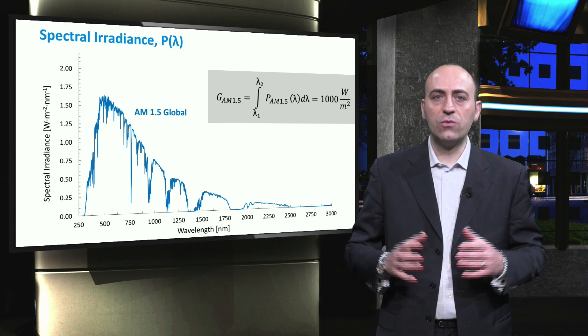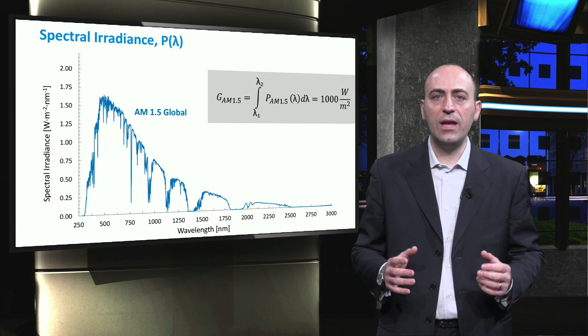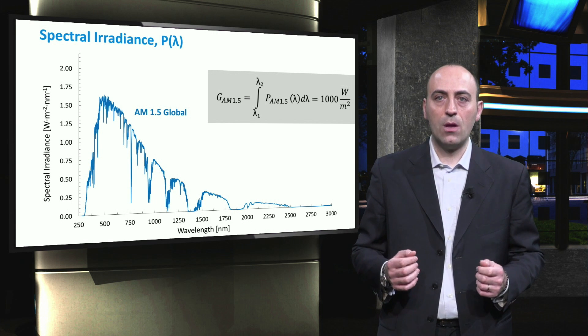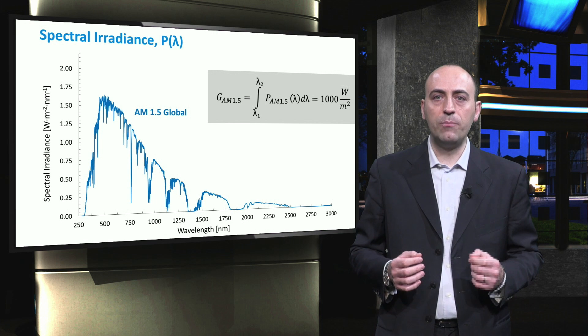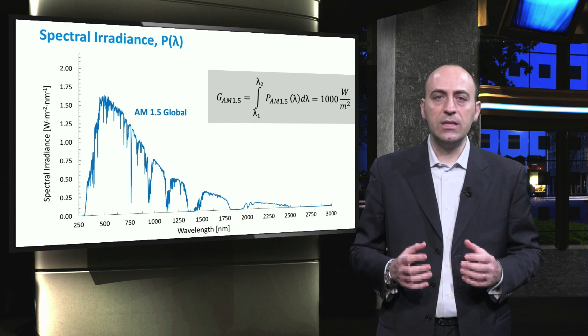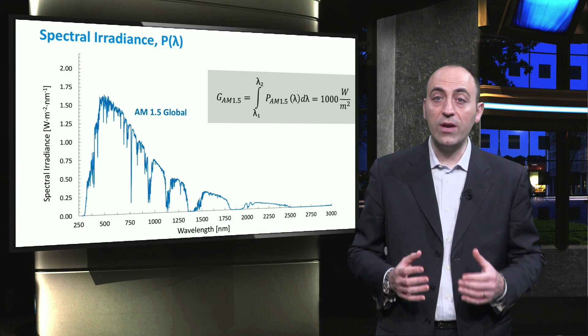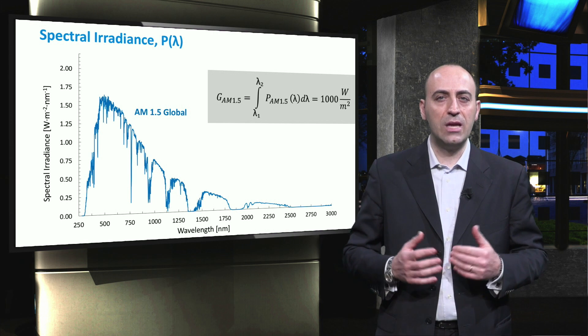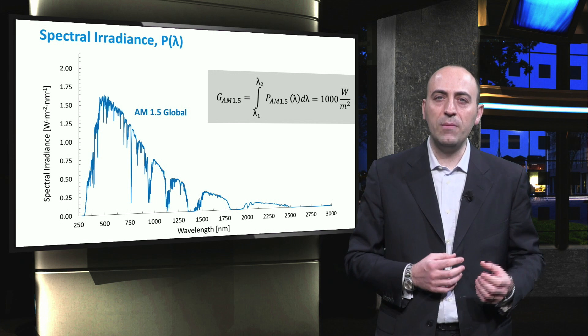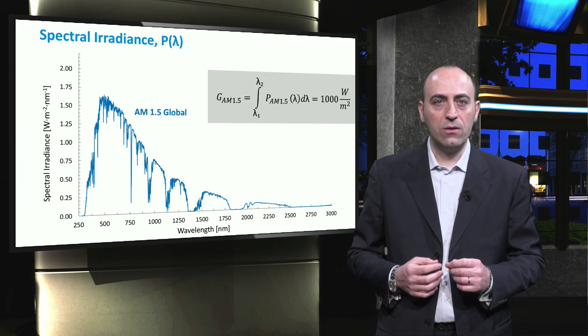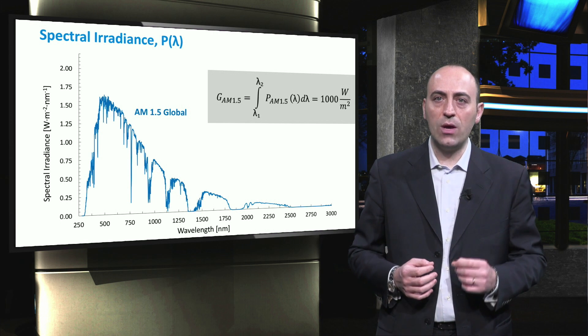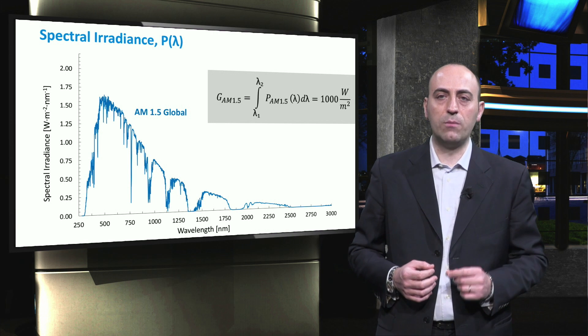When the spectrum is integrated over a certain wavelength range, then we obtain the irradiance, which is the power density of light per unit surface. In this context, G is the typical letter to indicate the irradiance, and you can come across several subscripts with a different meaning, but as long as you see G, it means that you have a unit which is Watt per square meter.